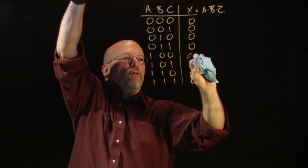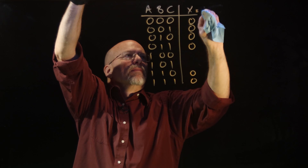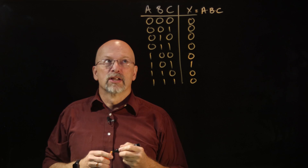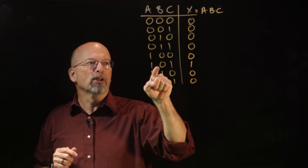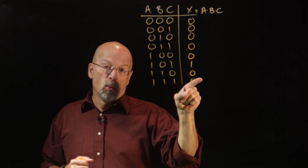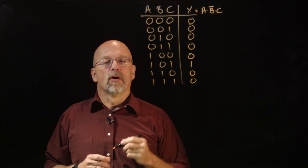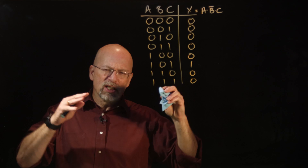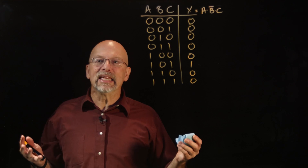Let's try another one. If we want to move the one to a different position, we change the expression. Let's say we want the one at the row where A is one, B is zero, and C is one. So we still have A and B and C, but we're looking at B being a zero while A and C are one. In sentence form: output a one if A is a one and B is not a one and C is a one — so we put a bar over B.